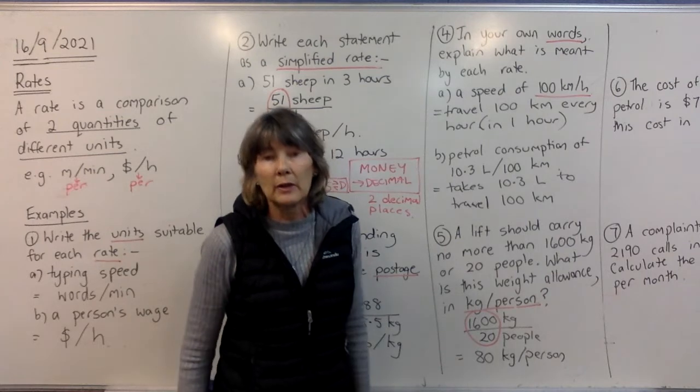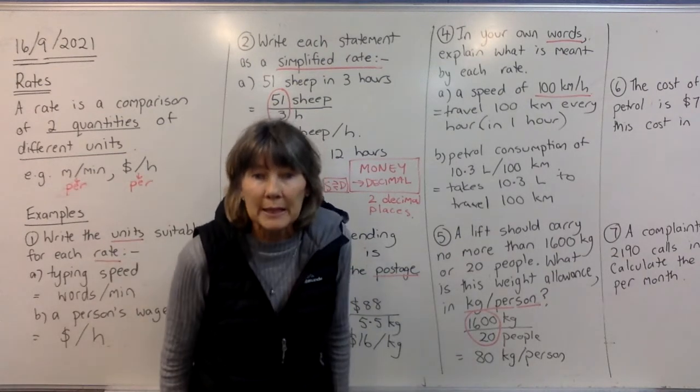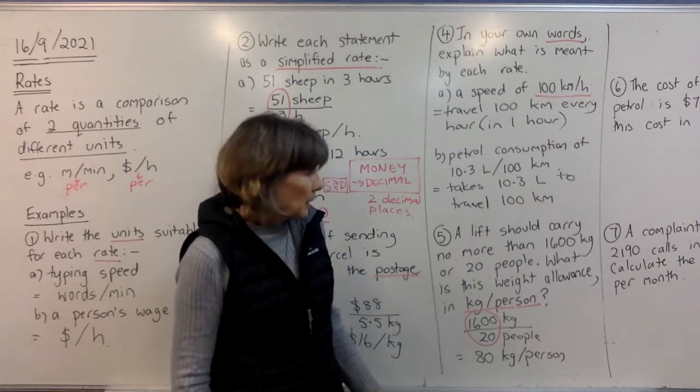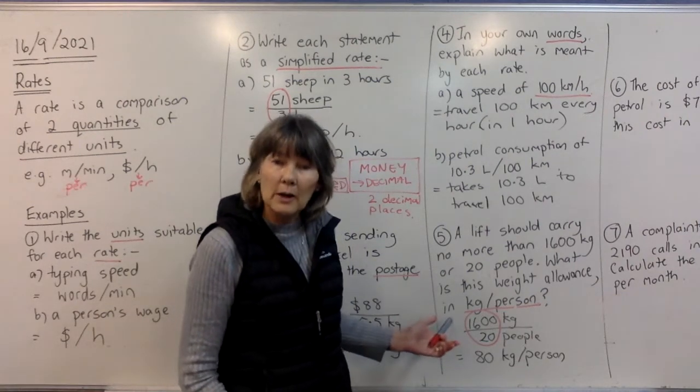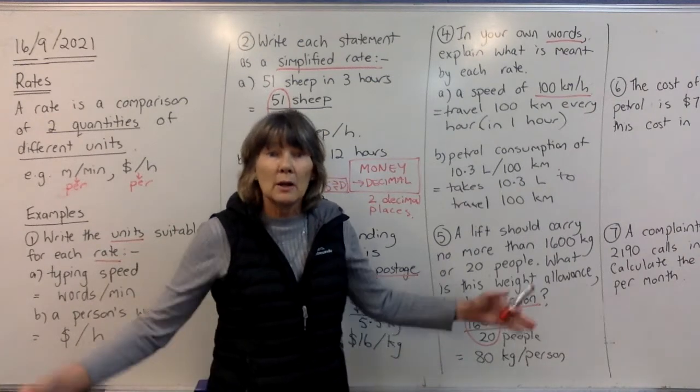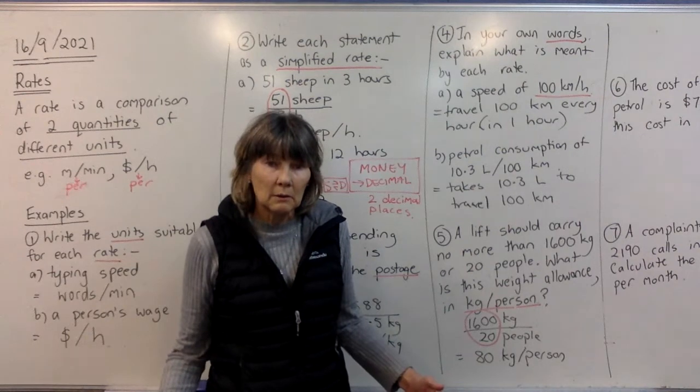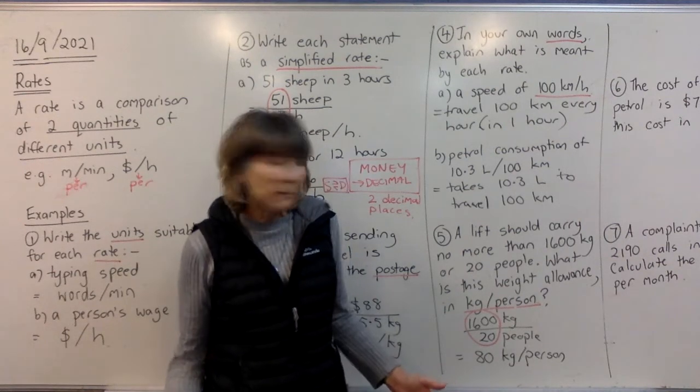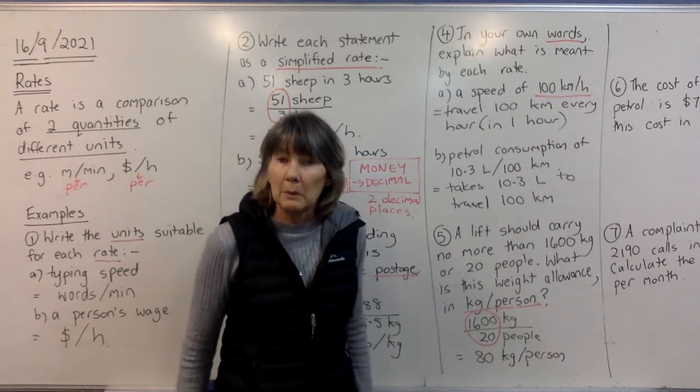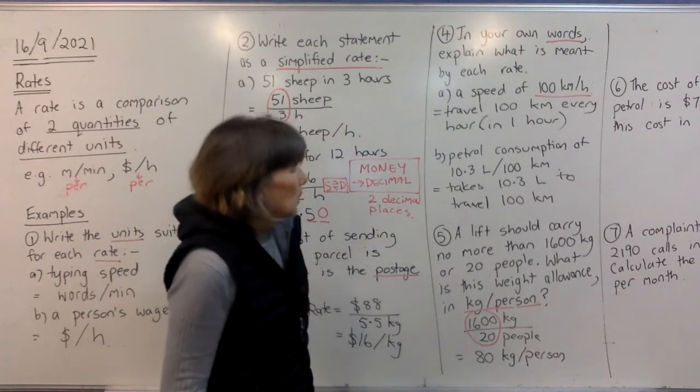Okay, now, if somebody got in the lift and they were very big, and they might be 120 kilograms, that would be okay, because there's probably a lot of people that would get in that would be less than 80. But if you had a big rugby union team, and they all got in the lift together, and they were all about 100 kilograms, then you don't want 20 people in your lift. Okay, and probably that wouldn't fit anyway.